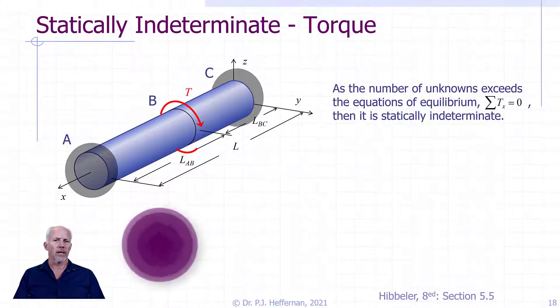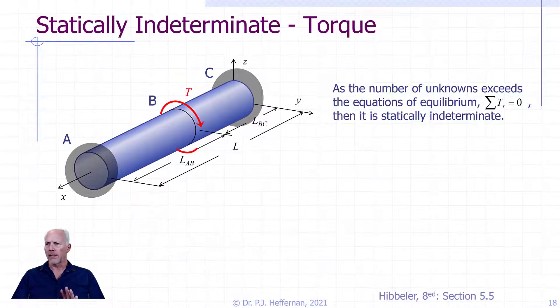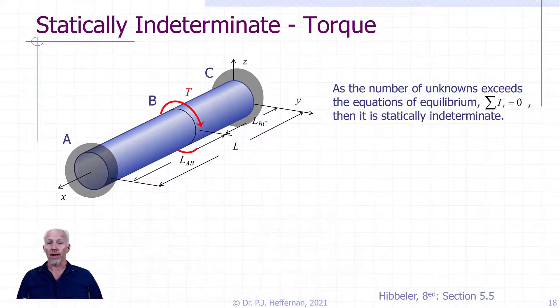The last thing we want to talk about in torsion is when they are statically indeterminate. The rod that we're looking at on this slide, the dark ends associated with it are intended to demonstrate that it is supported or constrained at both ends, A and C.